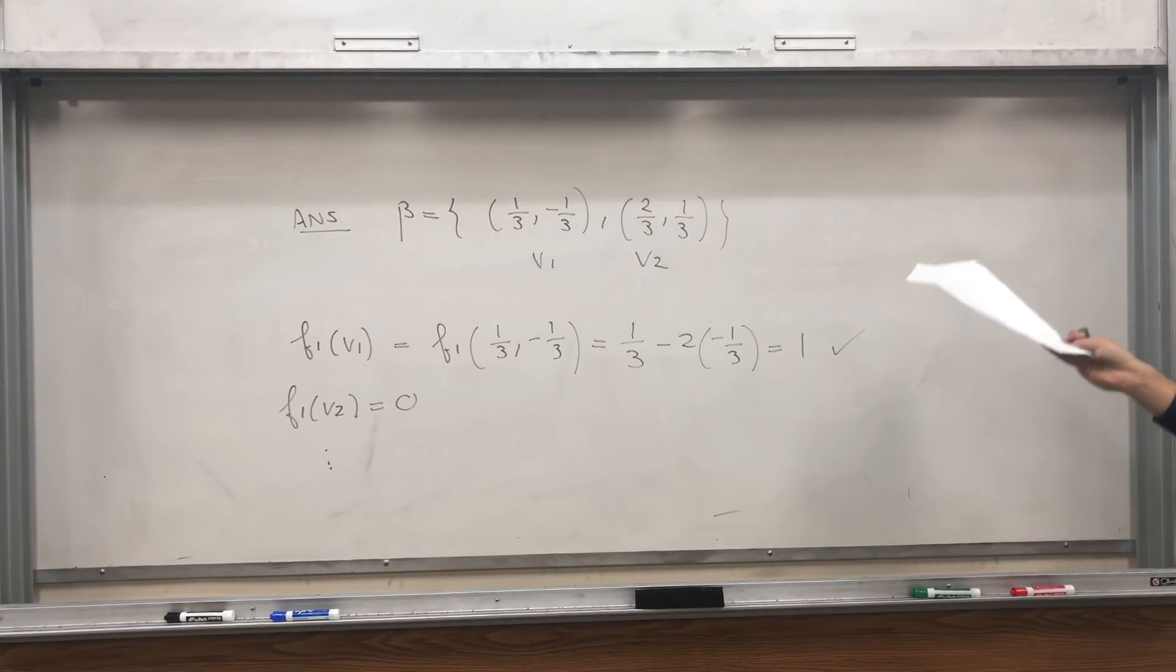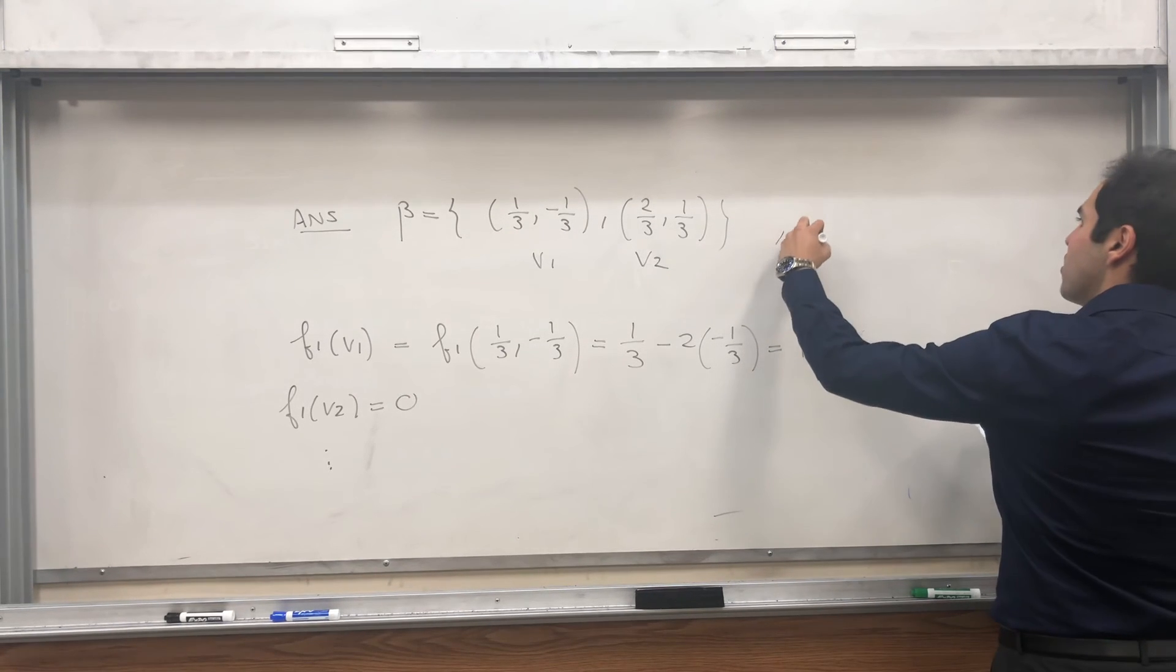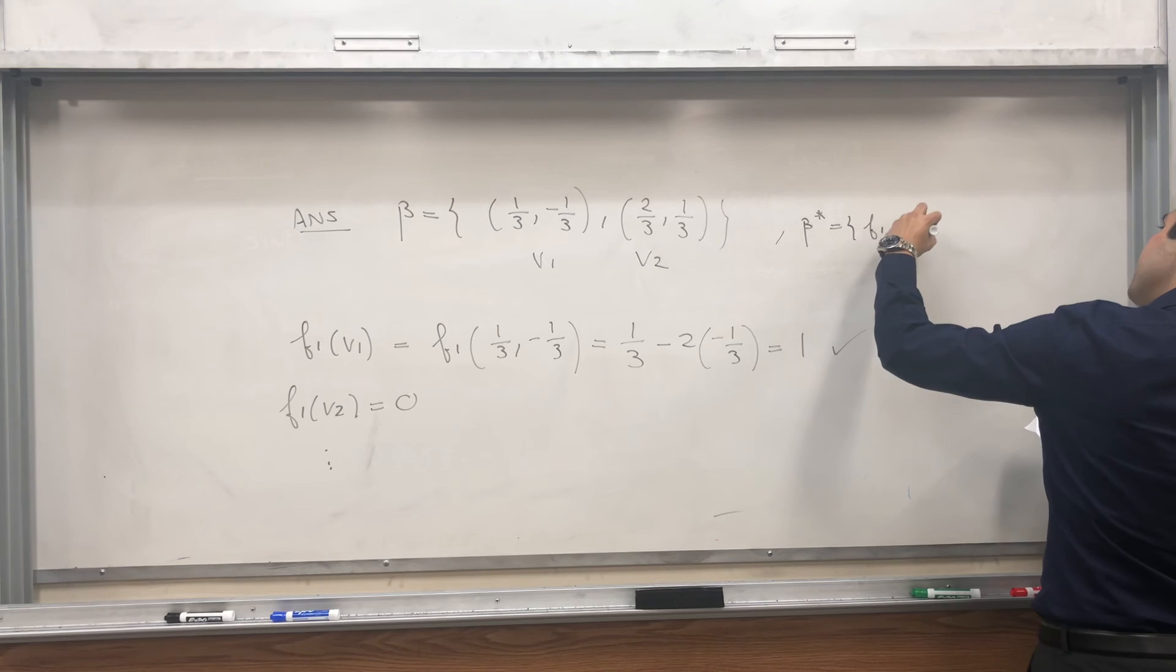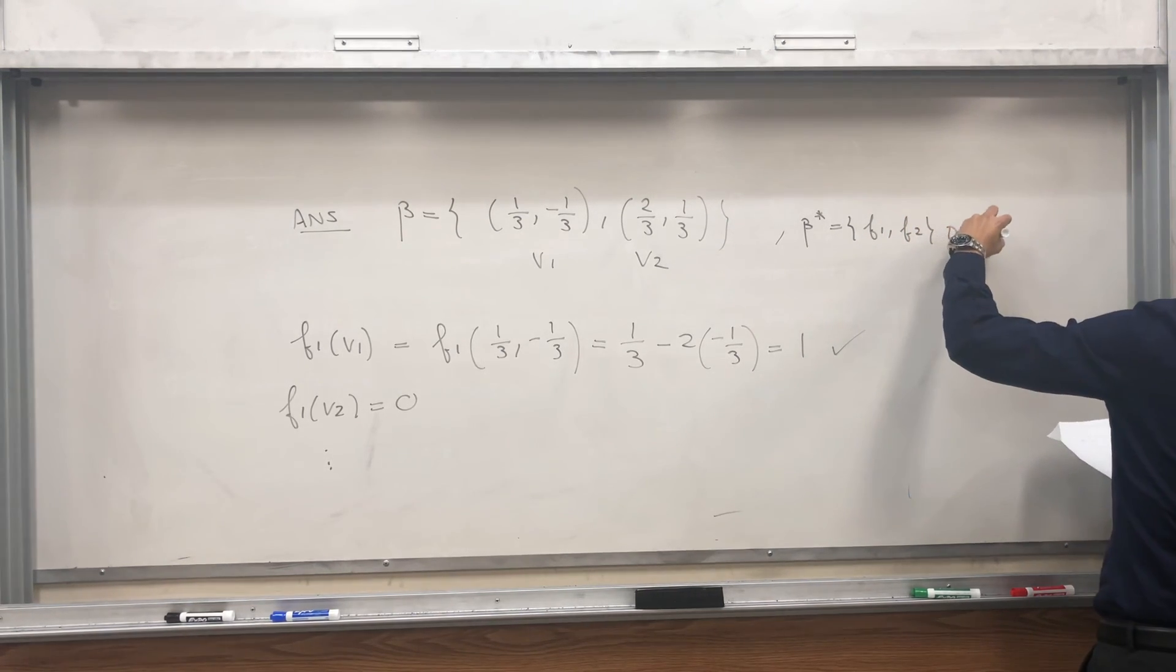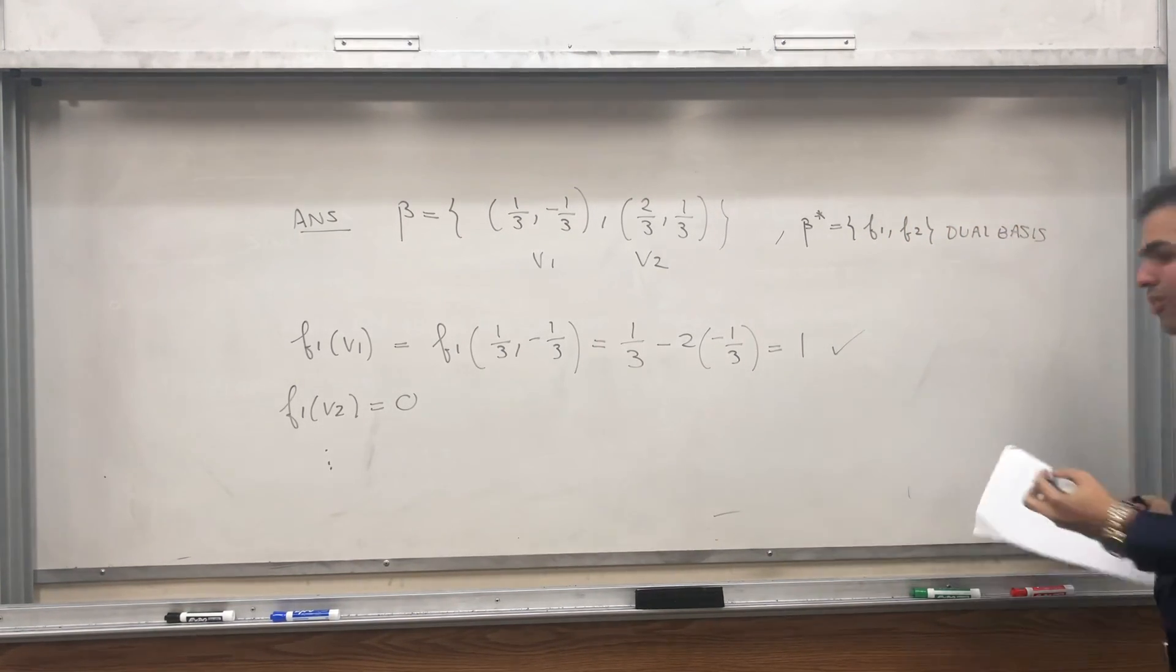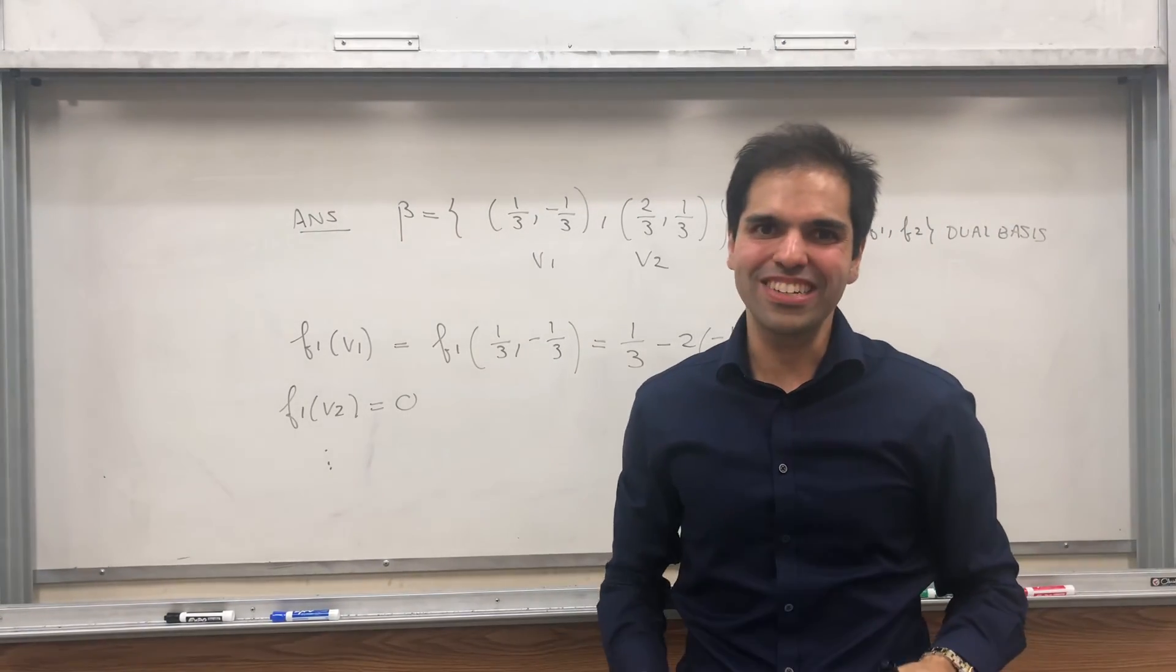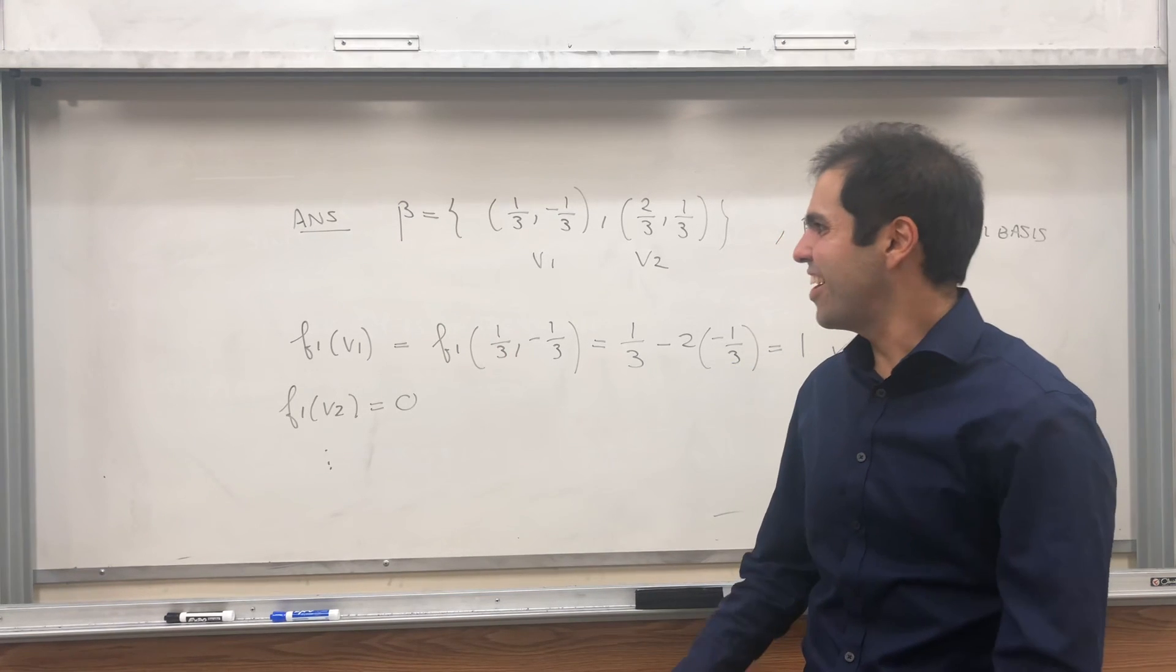So indeed, if this is our basis beta, then beta star, which is F1 and F2, is the dual basis. And the cool thing is, we can always do this in the finite dimensional case, which I think is awesome.